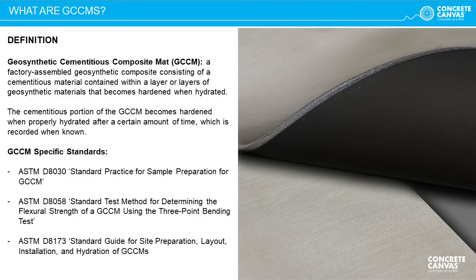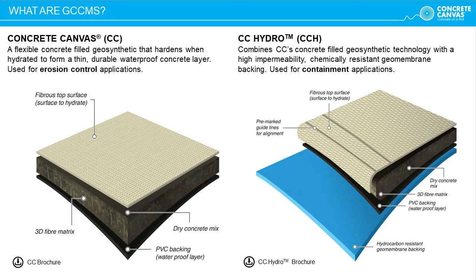Concrete Canvas is classified as a Geosynthetic Cementitious Composite Mat or GCCM. GCCMs are recognised by the ASTM International Standards Organisation, and a number of standards have been produced specifically covering material sampling, testing and installation which apply to CC. CC Hydro is classified as a Geosynthetic Cementitious Composite Barrier (GCCB). CC is generally used for erosion control applications, whilst CC Hydro is designed for use in containment applications.